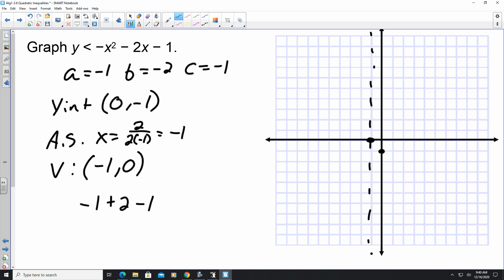I have all the information now that I need to graph this parabola. Because a is negative, it's an upside down V shape. And it's a dashed graph because it's less than.